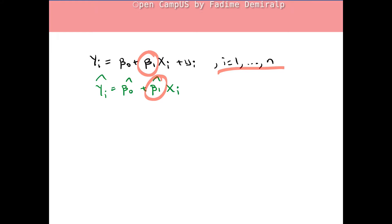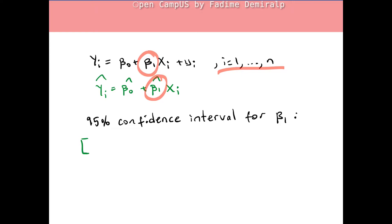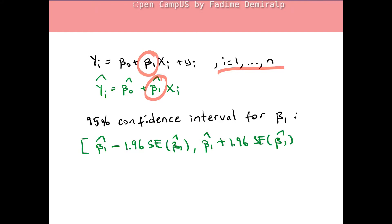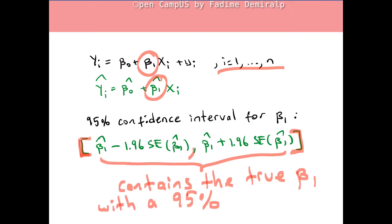When we construct, for example, the 95% confidence interval for beta 1, which is the estimate of the slope coefficient beta 1 minus the product of the critical value and the standard error as the left endpoint, and the estimate plus the product of the critical value and standard error as the right endpoint, we determine an interval that contains the true value of beta 1 with a 95% probability.